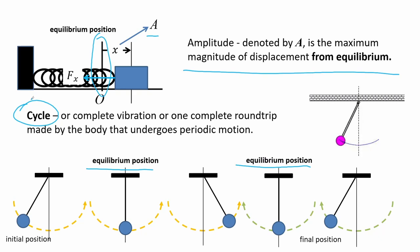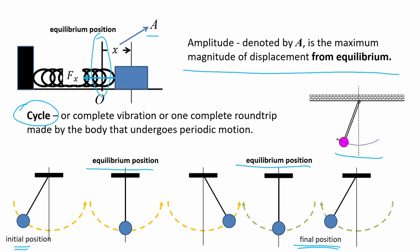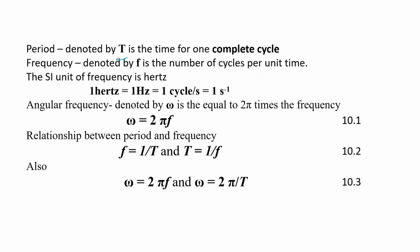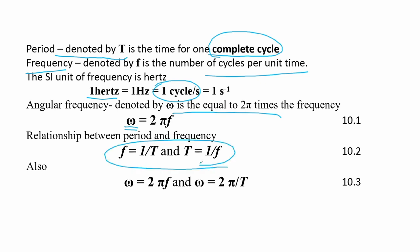A cycle is one complete vibration or round trip made by the block. Looking at the figure of a pendulum, one cycle is one rotation where the block ends at the position where it started. The period is the time required to achieve one complete cycle. Frequency is the number of cycles per unit time; its SI unit is hertz, equal to one cycle per second. Angular frequency is measured as the amount of cycles per length of 2π, and it equals 2π times frequency or 2π over the period T.